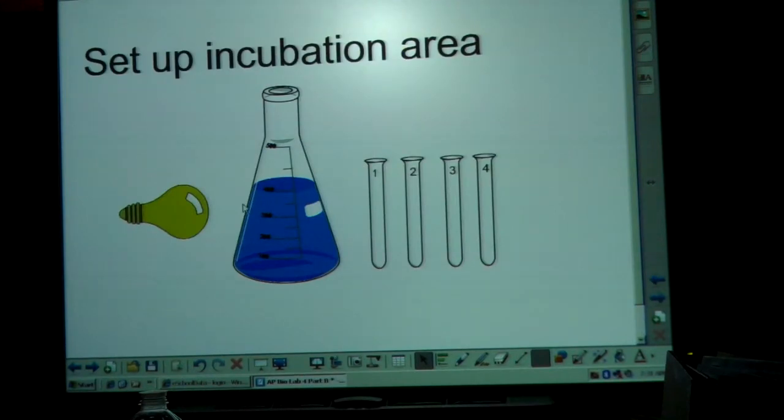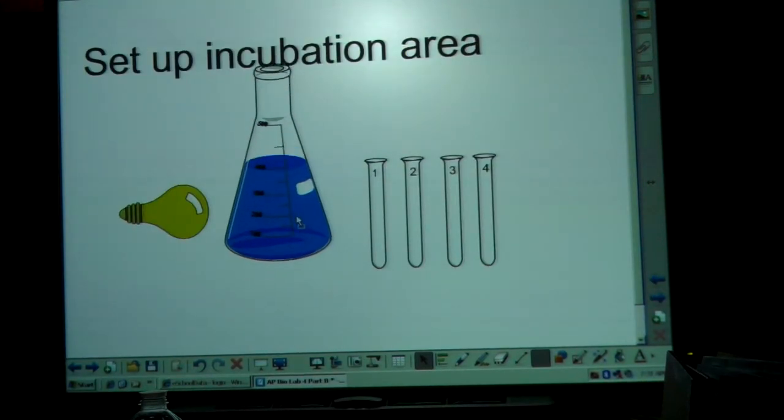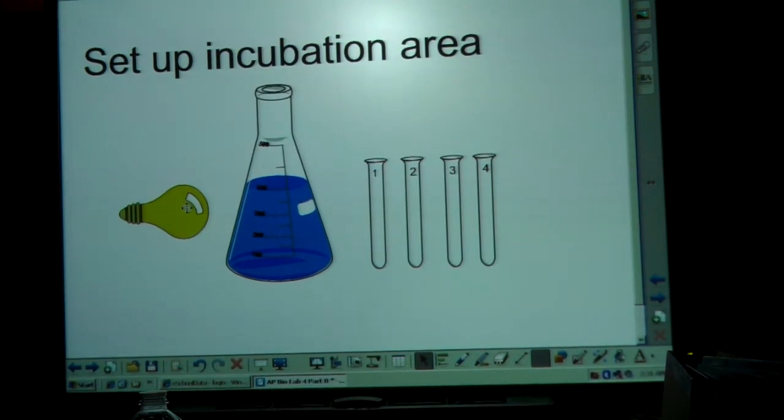Then you set up your incubation area where you have a light source, you have a beaker of water that's going to serve as your heat sink, which will allow light to get through but not any heat. And then you have your four test tubes and some kind of test tube rack. You want to number those one, two, three, four at the very top. You can also use cuvettes if you have cuvettes, though those tend to be quite a bit more expensive.